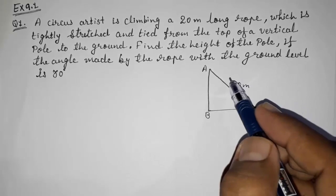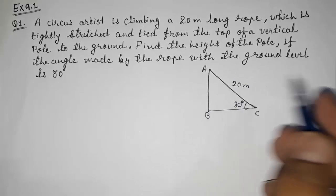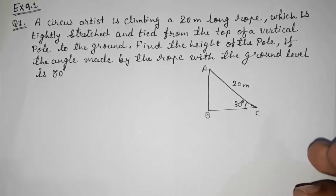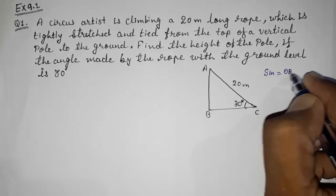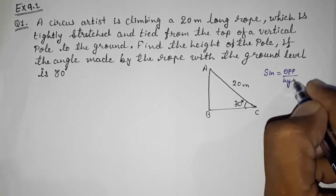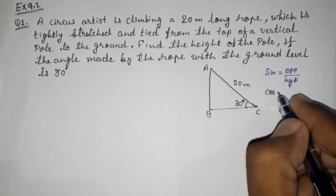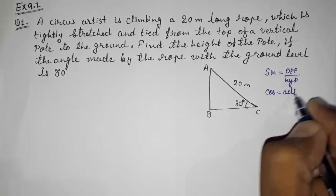What is sine, what is cos, what is tan? If you know only three, that's okay. Sine means opposite by hypotenuse, cos is adjacent by hypotenuse, and tan is opposite by adjacent.